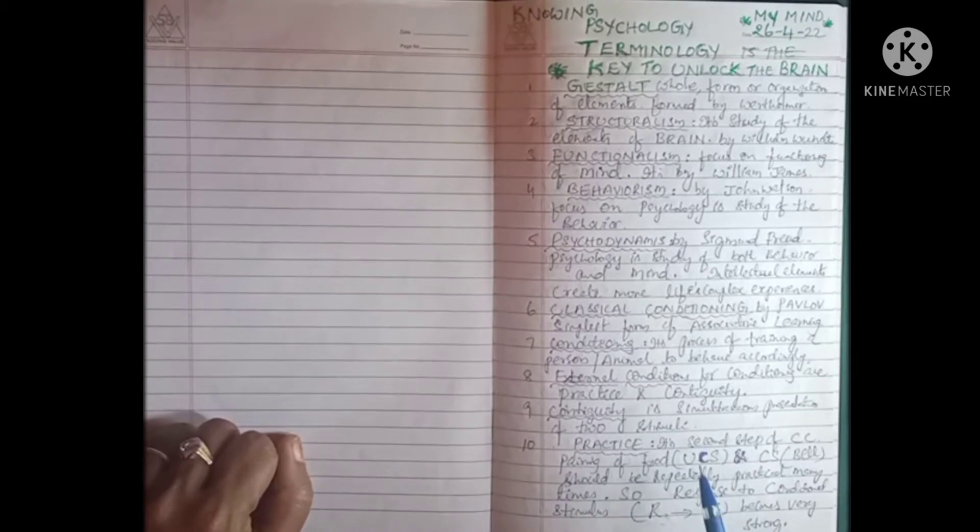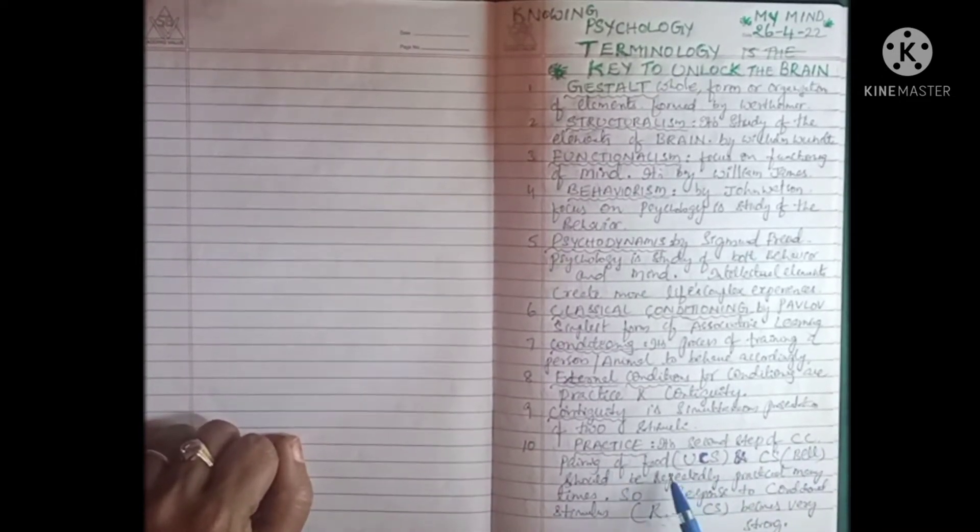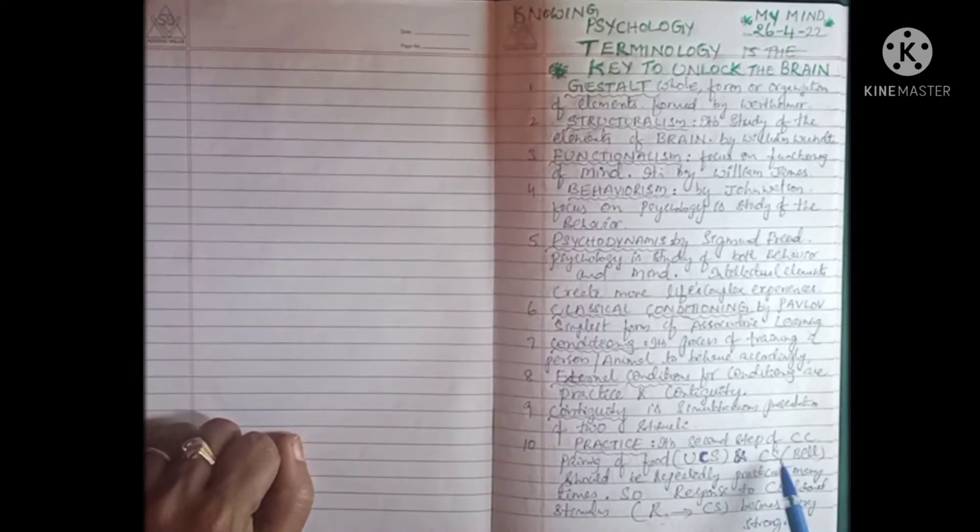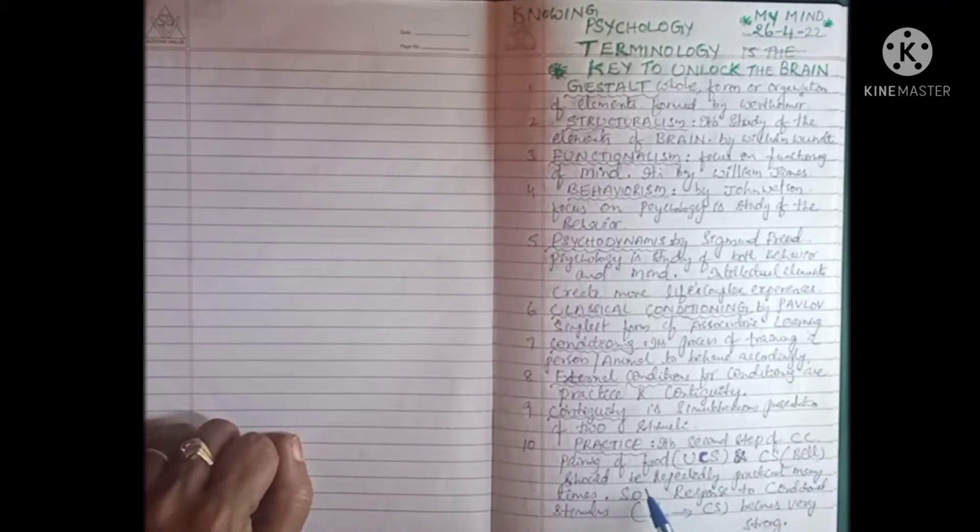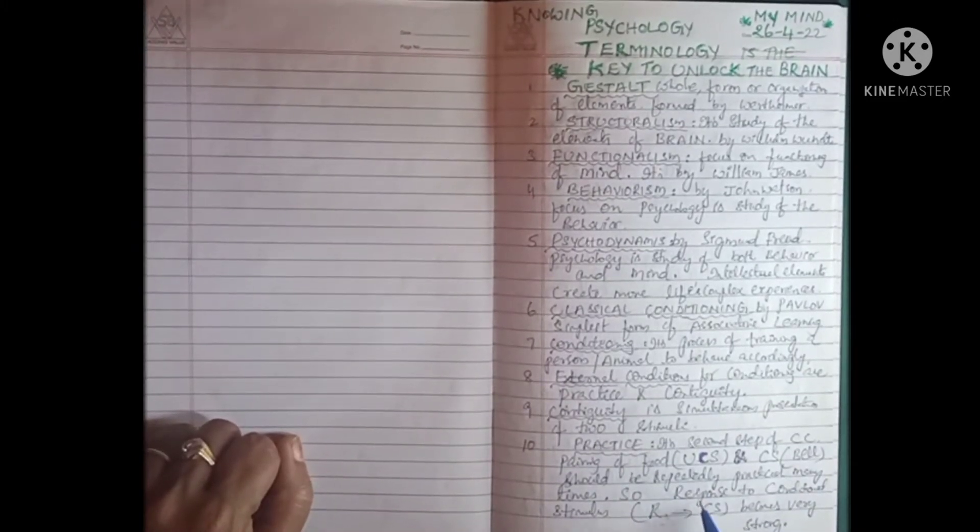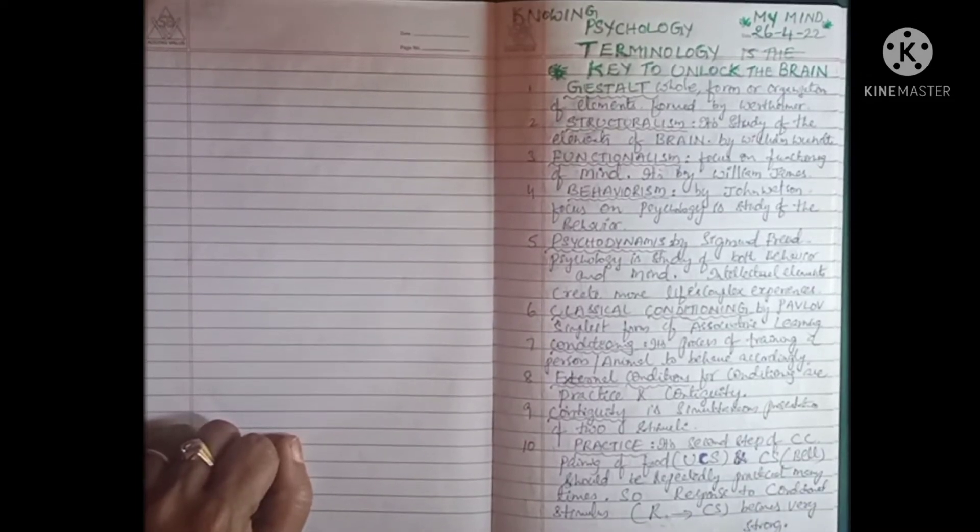Practice means it is the second step of classical conditioning. Pairing of food, the unconditional stimulus, and conditional stimulus like bell should be repeatedly practiced many times, so the response to the conditioned stimulus becomes very strong.